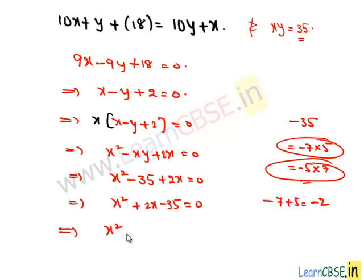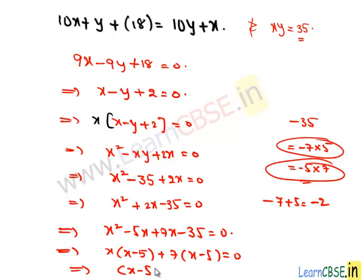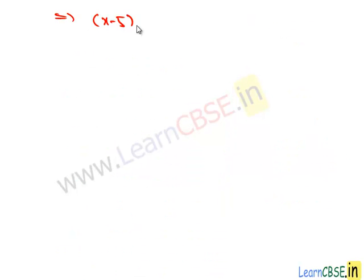Then we have x squared minus 5x plus 7x minus 35 equals 0. By taking x common, we get x times x minus 5. By taking 7 common from these two terms, we get x minus 5. Here we take x minus 5 common, x minus 5 times x plus 7, which is equal to 0. So we have the equation x minus 5 times x plus 7 equals 0. Here x should be 5 or x should be negative 7. Since the digits are not negative, so we take the positive value, which is x equals 5.